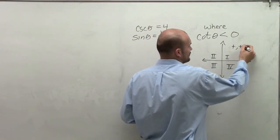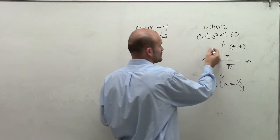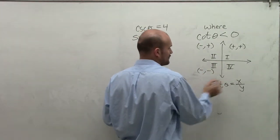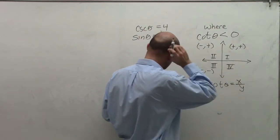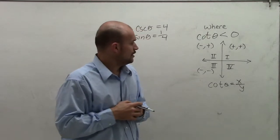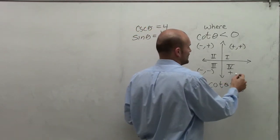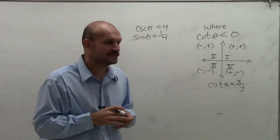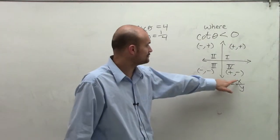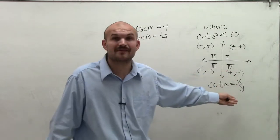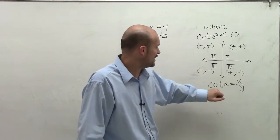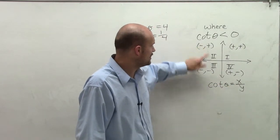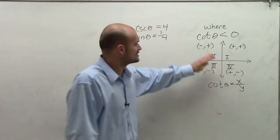In the first quadrant, x is positive and y is positive. In the second quadrant, x is negative and y is positive. In the third quadrant, x is negative and y is negative. In the fourth quadrant, x is positive and y is negative. So we need to determine when cotangent of theta is less than 0 — that is, when it has a negative value. Cotangent is negative in the second quadrant and also in the fourth quadrant.